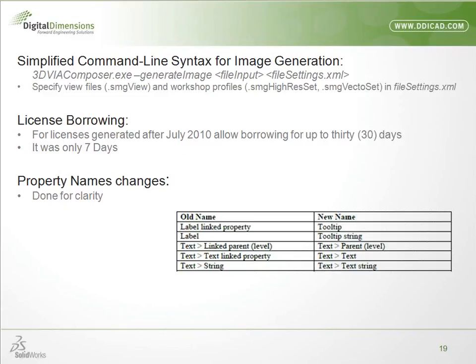License information: if your license was generated after July 2010, you can borrow a network license for up to 30 days — previously it was only seven days. Some property names have also changed: what was called Label Link Property is now called Tooltip, and the information within it is the Tooltip String. What was Linked Parent Level is now just Parent Level Text. They've made those names a lot easier to understand.